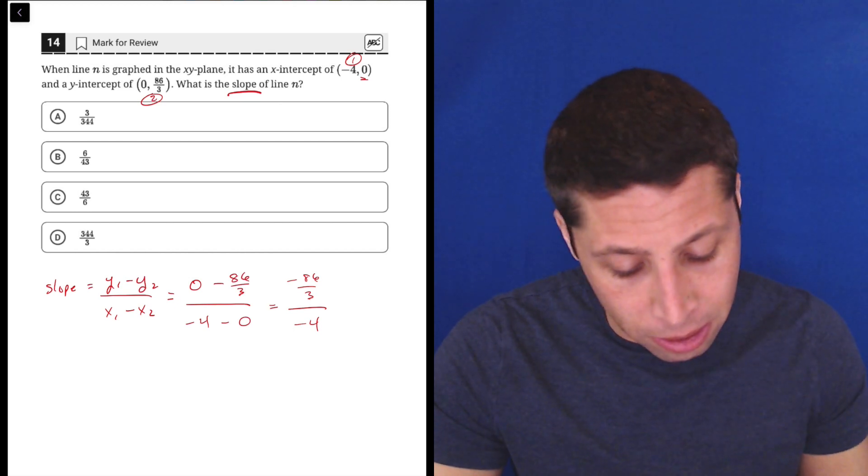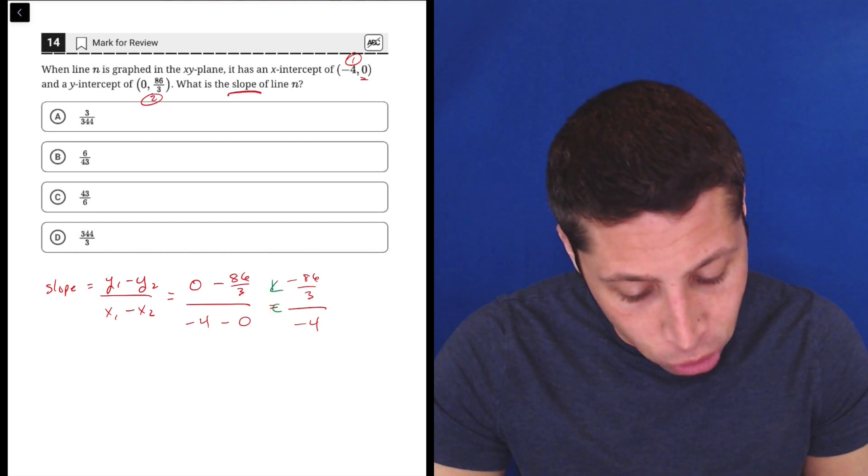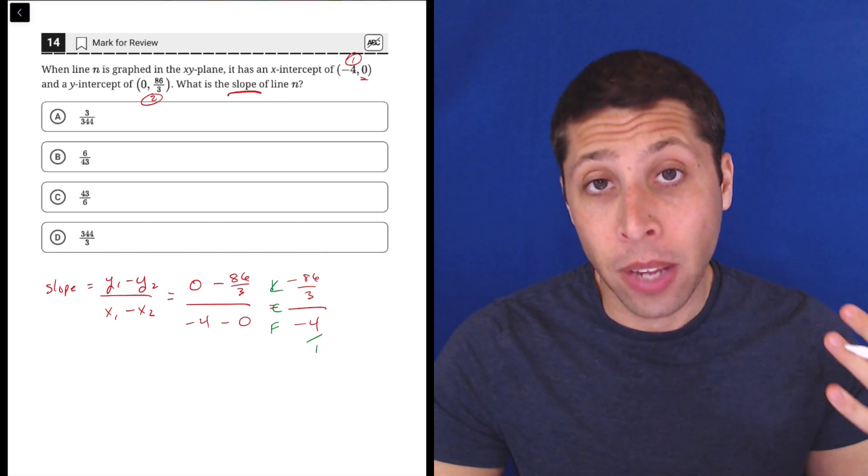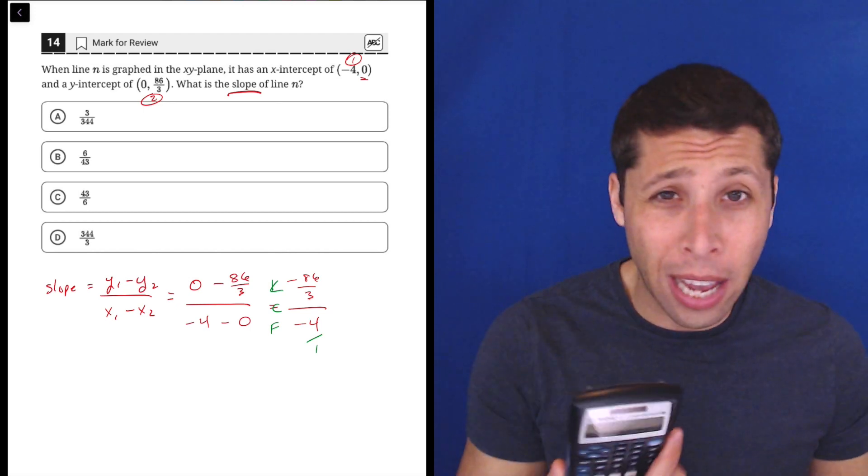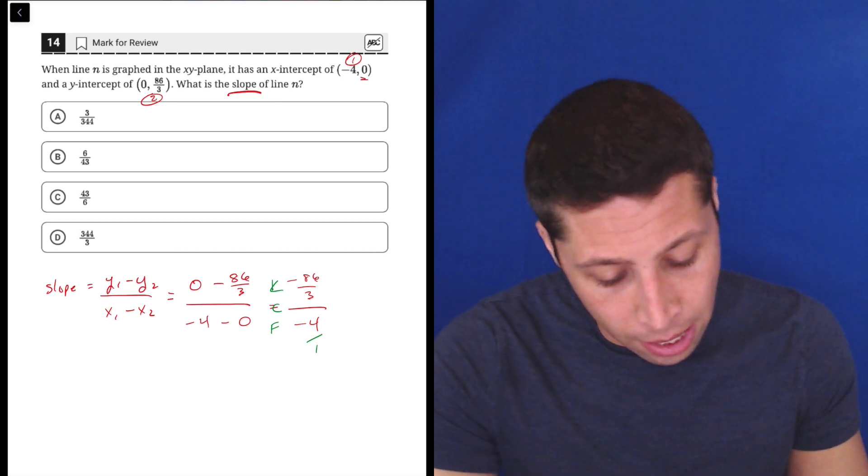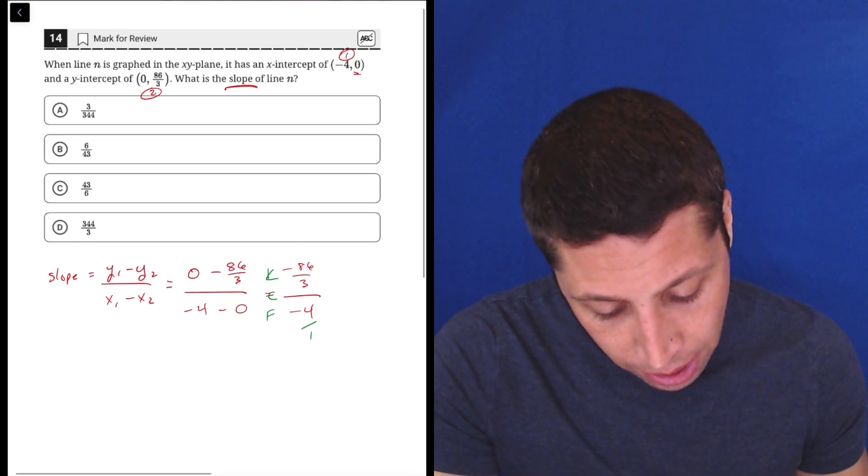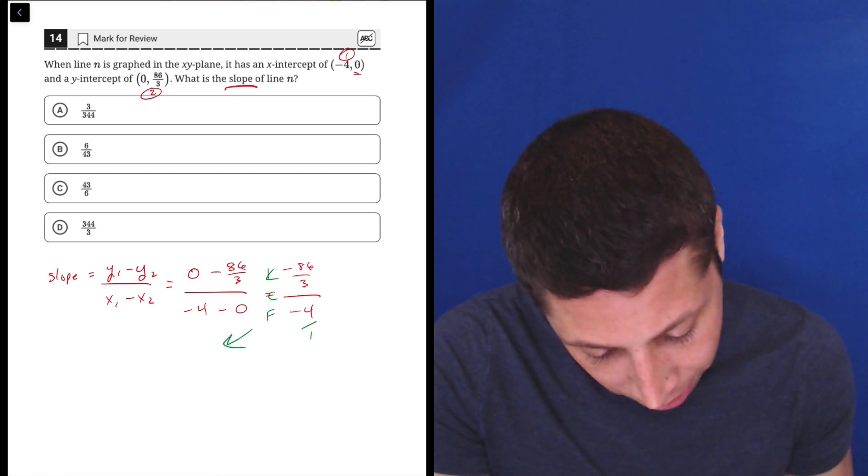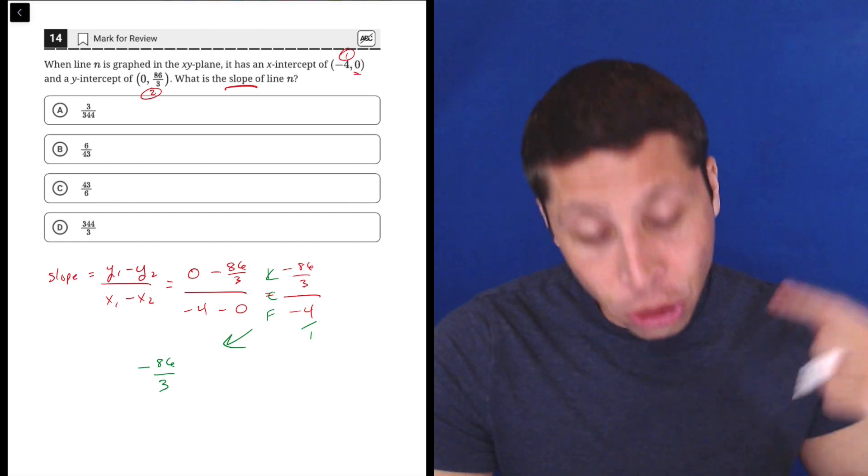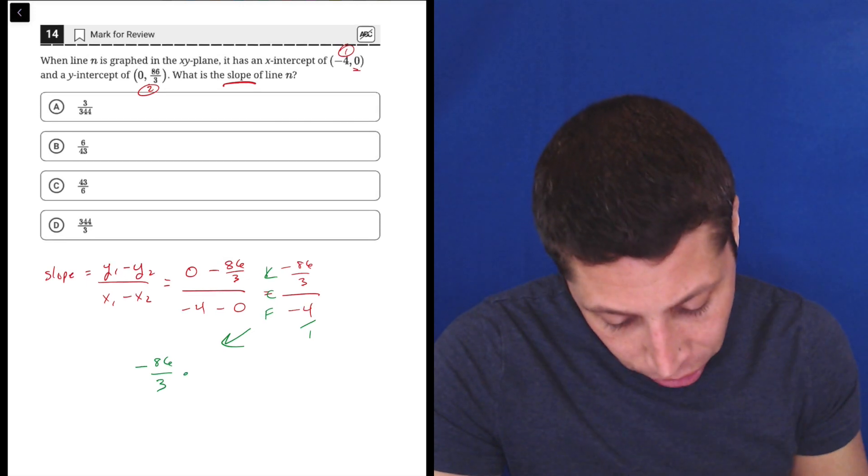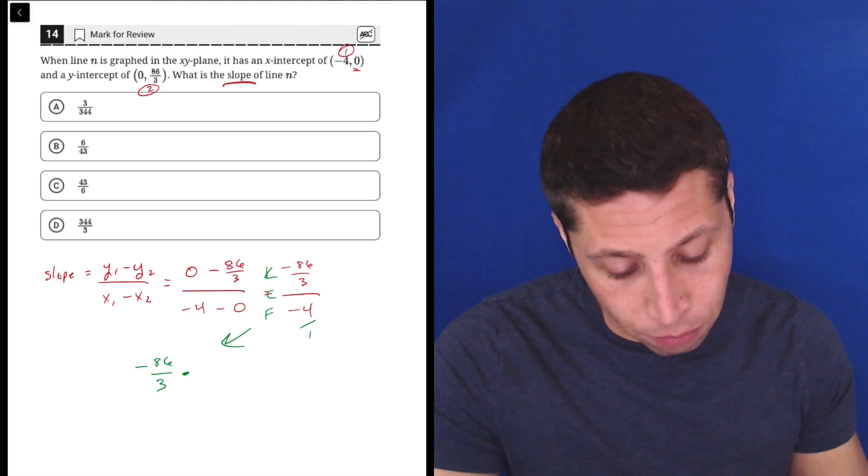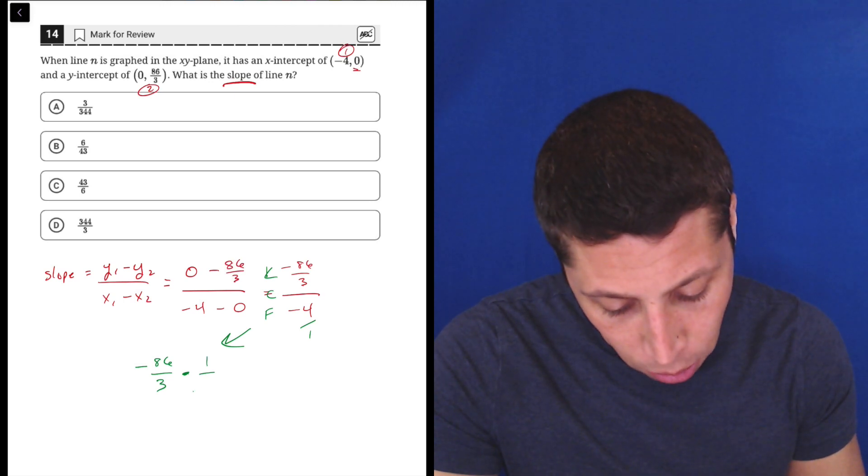Now I would use the principles of keep, change, flip, which is how we deal with dividing fractions. And at this point, we could just go to the calculator. We could go to Desmos, but I'm just going to, this is a good review of how to do it just in case. So the way that keep, change, flip works is we keep the top fractions. So I'm going to come down here. So negative 86 over 3. We change division to multiplication. And we flip the bottom fraction upside down. So instead of negative 4 over 1, we're going to do 1 over negative 4.